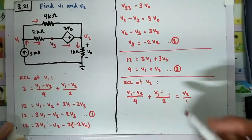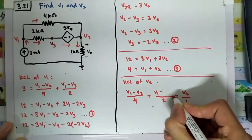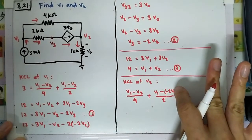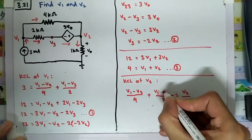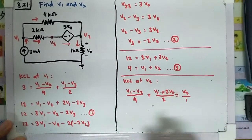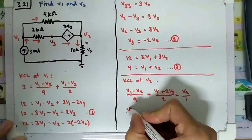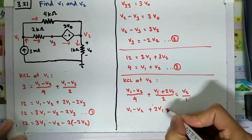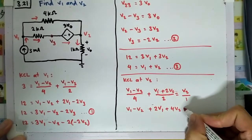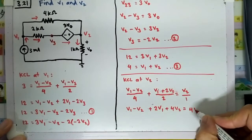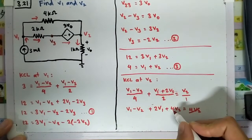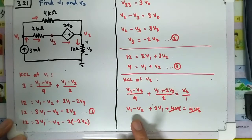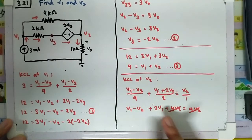This equals v2 divided by 1. We substitute v3 equals minus 2v2, so v1 minus v3 becomes v1 plus 2v2. Multiplying both sides by 4, we get v1 minus v2 plus 2v1 plus 4v2 equals 4v2. The 4v2 terms cancel, leaving 3v1 plus 3v2 — wait, simplifying: 3v1 minus v2 equals zero.